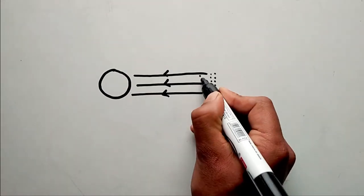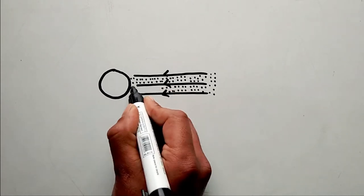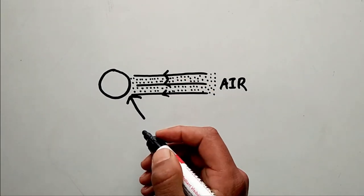When we talk about the smooth ball, at the front the pressure is high because the ball is colliding with the air.